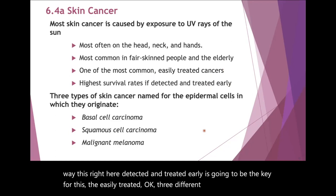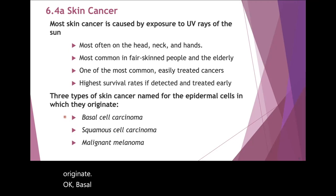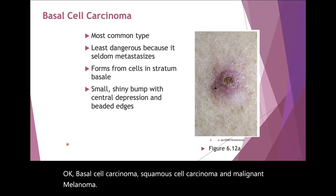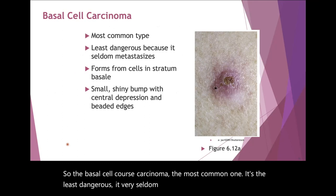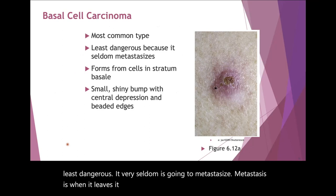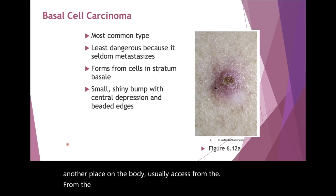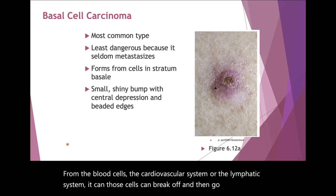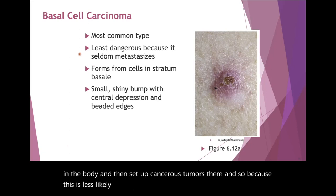Three different types of skin cancers are named for the epidermal cells in which they originate: basal cell carcinoma, squamous cell carcinoma, and malignant melanoma. Basal cell carcinoma is the most common and the least dangerous — it very seldom metastasizes. Metastasis is when cancer leaves its origin and those cells go to another place in the body, usually accessing the cardiovascular system or lymphatic system, breaking off and setting up cancerous tumors elsewhere. Because basal cell carcinoma is less likely to do that, it is the least dangerous.